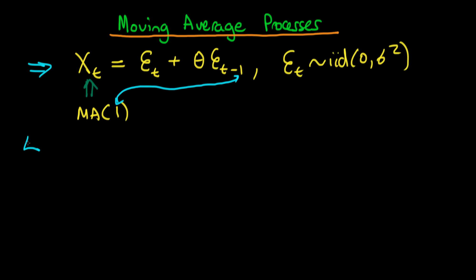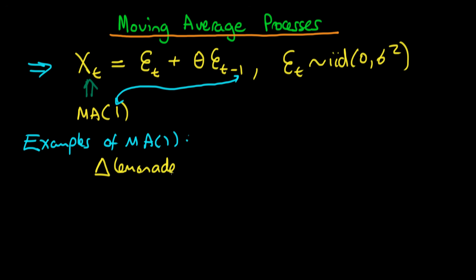What are some particular examples of MA(1) processes? The first example is the change in demand for lemonade at time t, where t represents daily data. We might say the change in demand for lemonade equals some error term epsilon t minus 0.5 times epsilon in the last period.